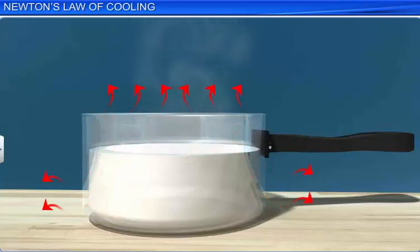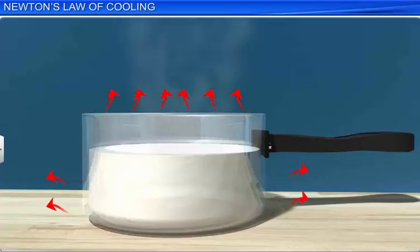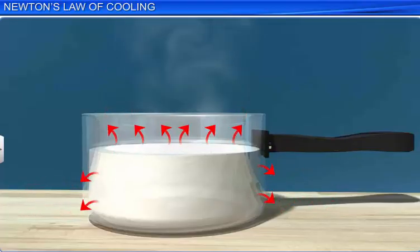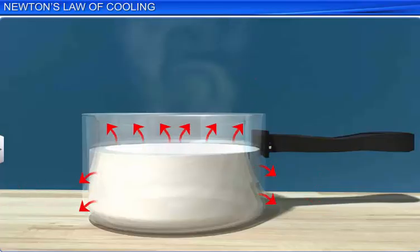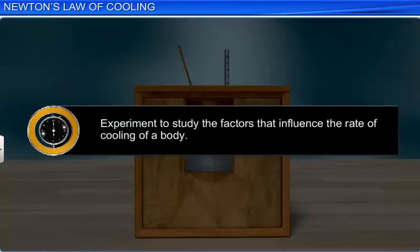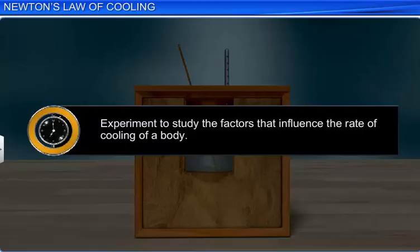It is a common phenomenon that a hot body exchanges heat with its surroundings and cools. The heat lost by the body to its surroundings per unit time is called the rate of cooling of the body and depends on several factors. Let's conduct an experiment to study the factors that influence the rate of cooling of a body.